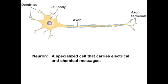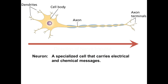A neuron carries both an electrical and a chemical message, but they only carry messages in one direction. The direction that the message travels is from the dendrite towards the cell body, and then from the cell body down the axon towards the axon terminal. No matter which way, the direction of the nerve impulse always travels from the dendrites to the cell body to the axon towards the axon terminal.